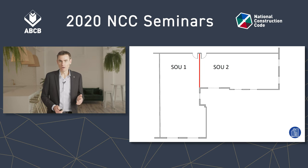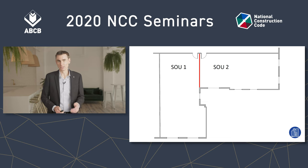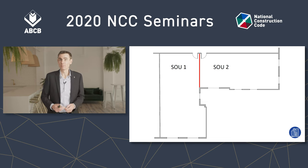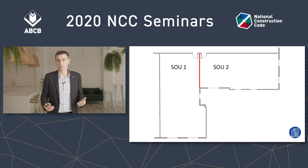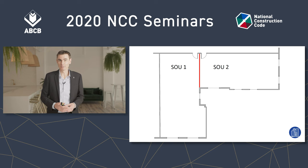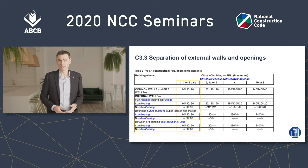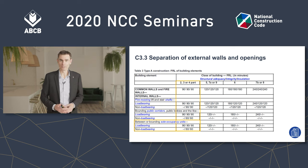This wall, highlighted in red between the two SOU units, is not a firewall. It has an FRL, yes, but that doesn't make it a firewall. The BCA doesn't require each SOU unit to be a fire compartment. It hasn't asked for the bounding wall to be a firewall — it simply asks that the internal wall bounding the SOU units has an FRL.